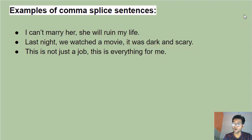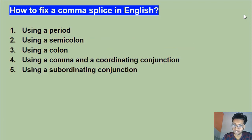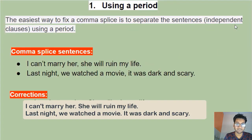This is a very common mistake — many teachers and English speakers make it. Now let's understand how to correct it. There are five ways to fix a comma splice in English: number one, using a period; number two, using a semicolon; number three, using a colon; number four, using a comma and a coordinating conjunction; and number five, using a subordinating conjunction.